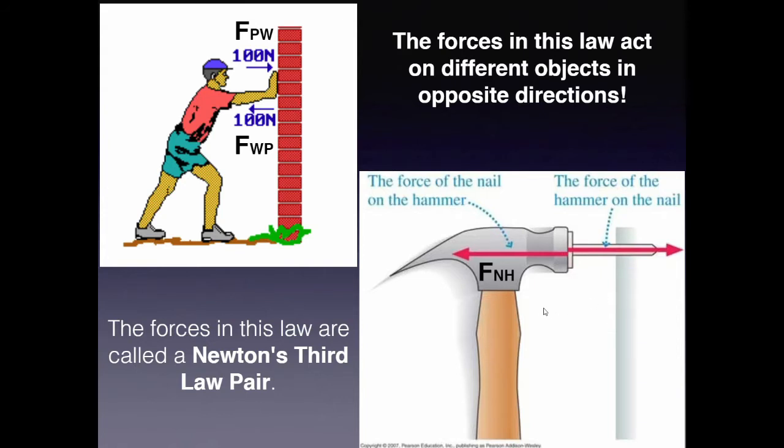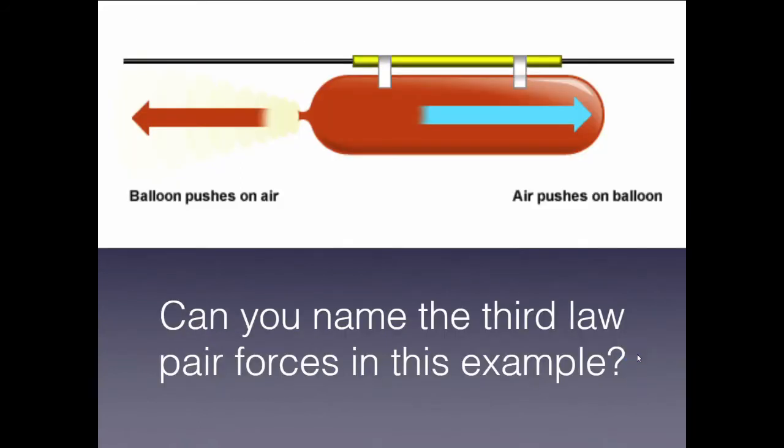I'm going to talk about why something moves like this nail in another slide. But let's name these forces. So this force here, the second force I named, that's the force by the nail on the hammer. And this is the force by the hammer on the nail. So F_NH, F_HN. That's a Newton's third law pair too.